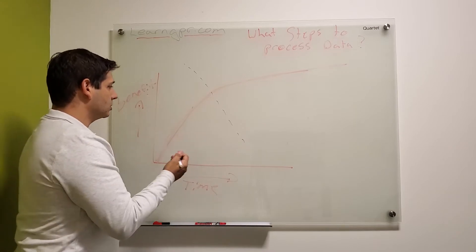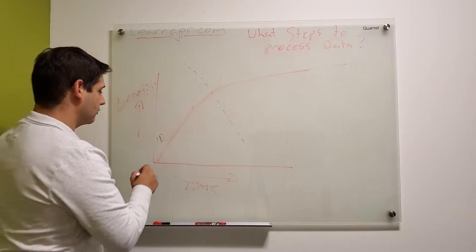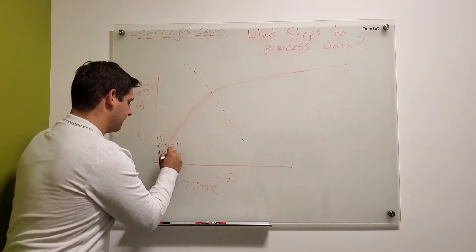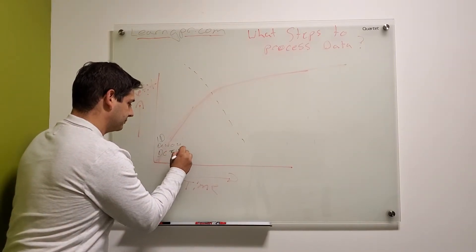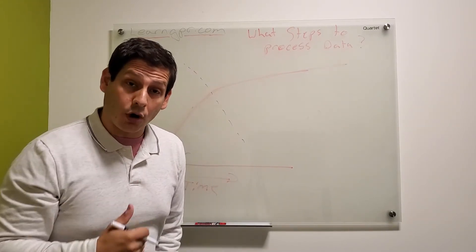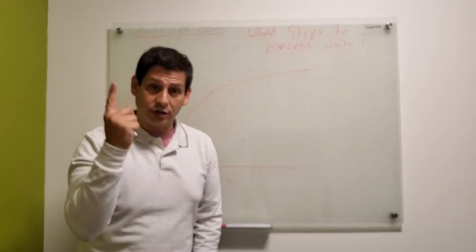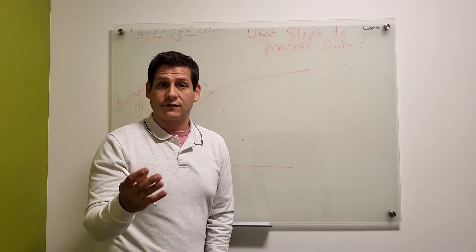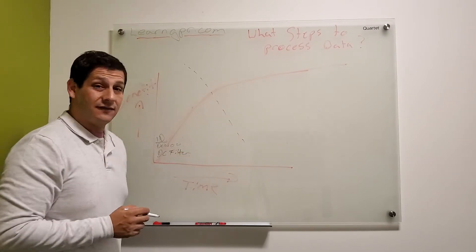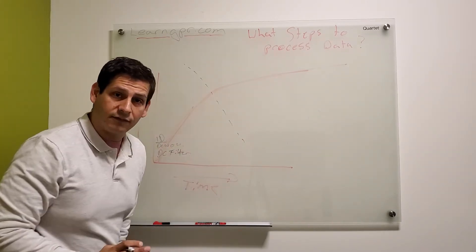Starting with 1D data: we're looking at DWOW functions or DC filters. This is usually done while you collect the data. Most systems automatically will use these filters to correct for drift. I have videos out there on YouTube about one-dimensional filters, how to use them, what they do, including DWOW filters and DC filters. So that's 1D — critical, but usually done for you automatically.